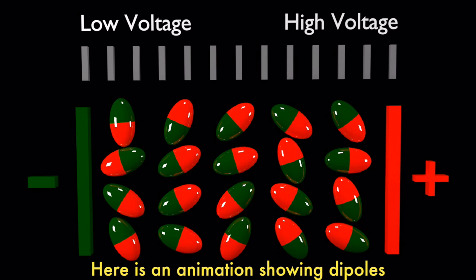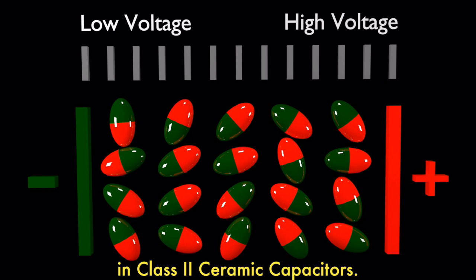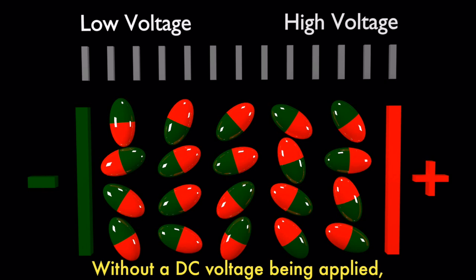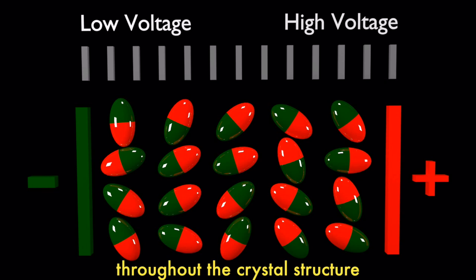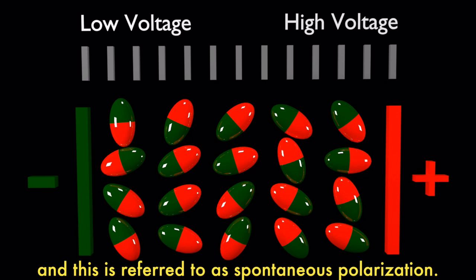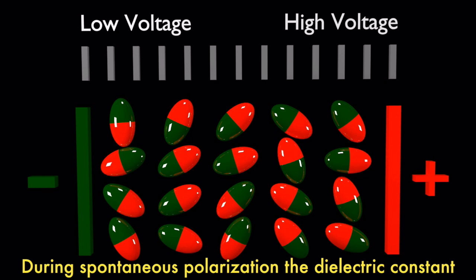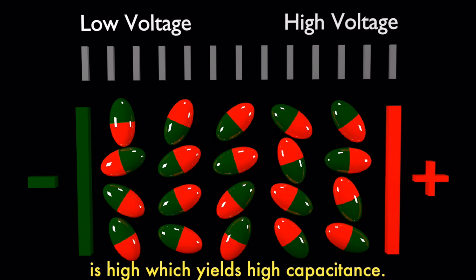Here's an animation showing dipoles in class 2 ceramic capacitors. Without a DC voltage being applied, an electric field is not present and the dipoles will arrange themselves randomly throughout the crystal structure, and this is referred to as spontaneous polarization. During spontaneous polarization, the dielectric constant is high, which yields high capacitance.